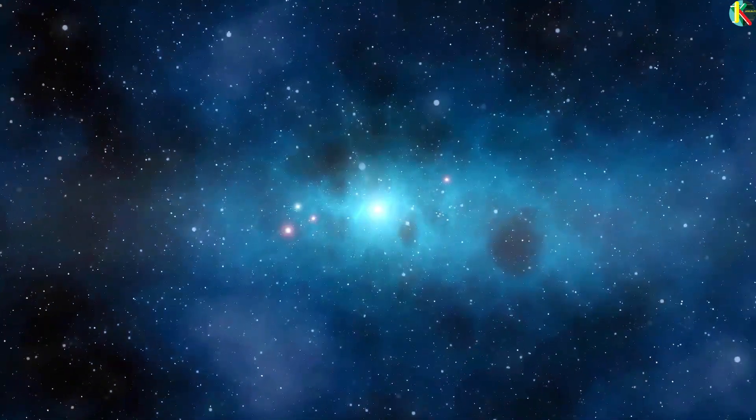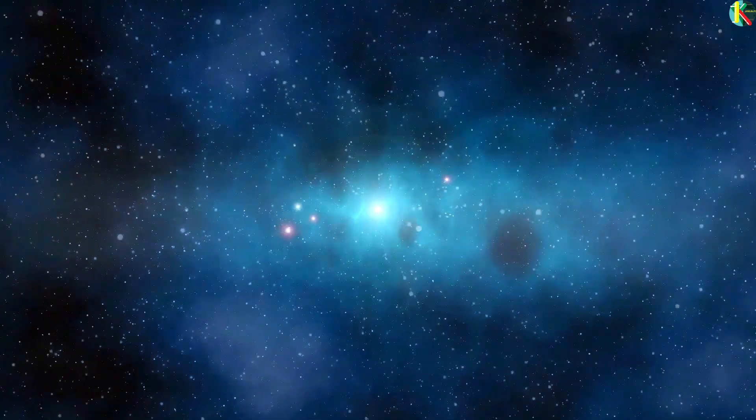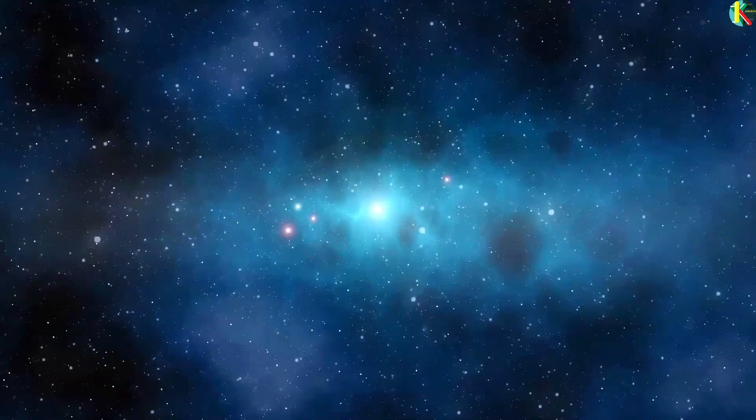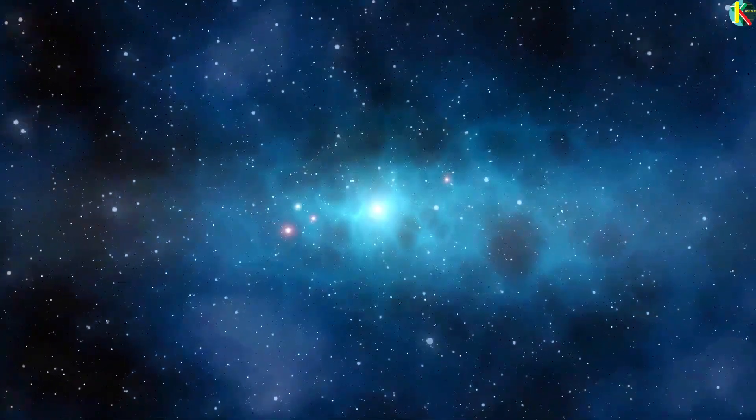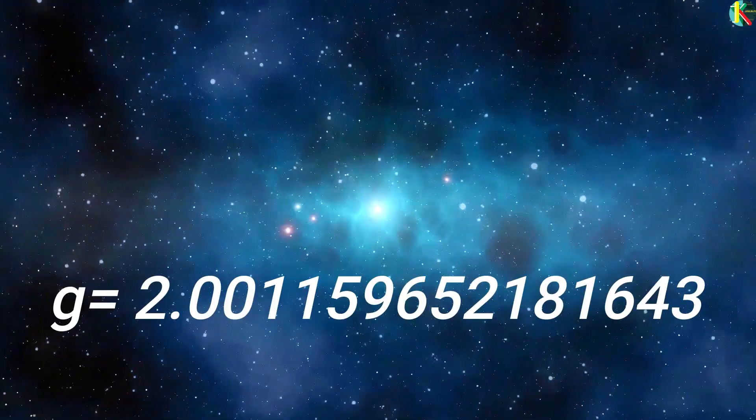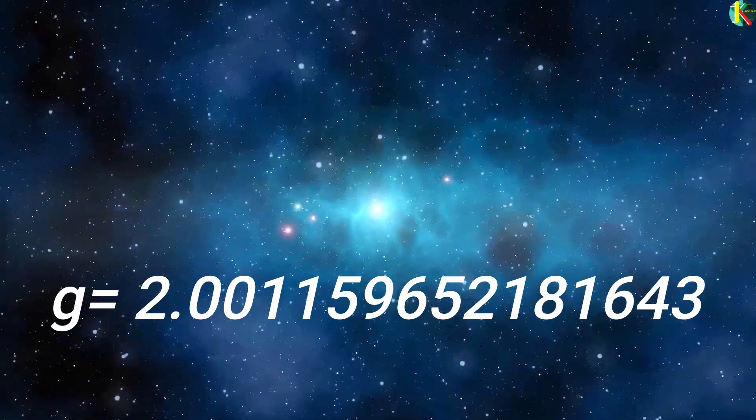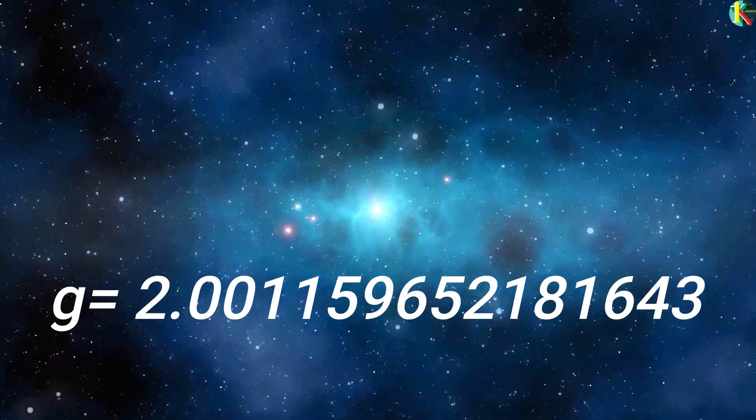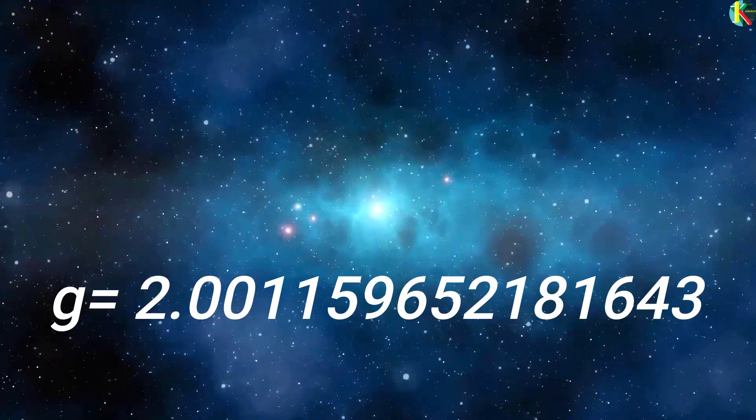The latest calculations rely on powerful computers to add many thousands of Feynman diagrams and get us our g-factor to 12 significant figures. It matches experimental measurements to the accuracy of one part in a billion which is by far the most accurate prediction in all of physics.